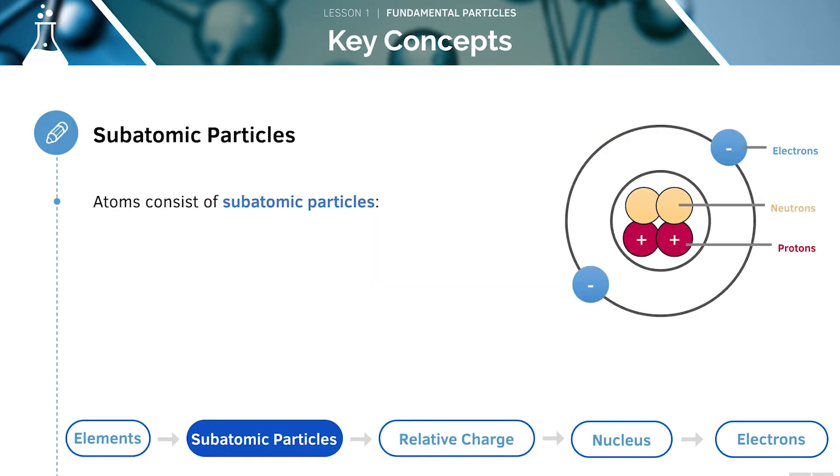The final subatomic particle we need to know is the proton. All atoms consist of subatomic particles: protons, neutrons and electrons.